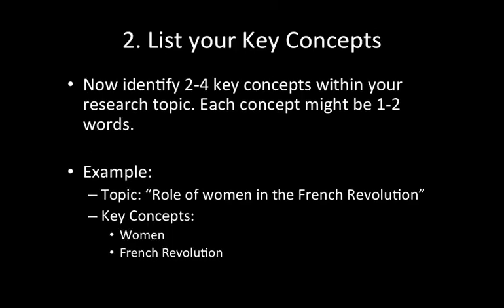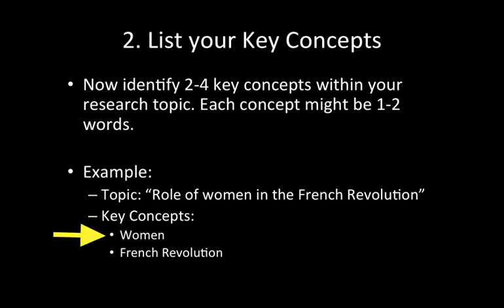Now we're going to list our key concepts. In order to do this, identify two to four key concepts within the research topic sentence you just created. Each concept might be one to two words. For example, if our topic is the role of women in the French Revolution, our key concepts would be women and the French Revolution.